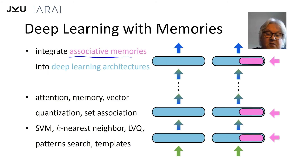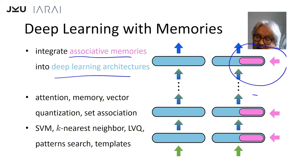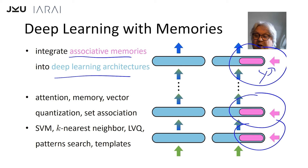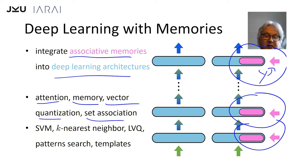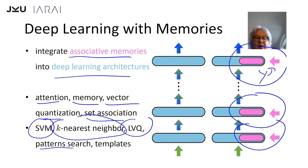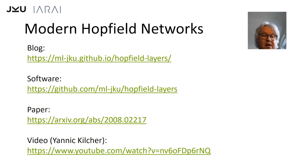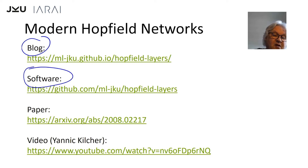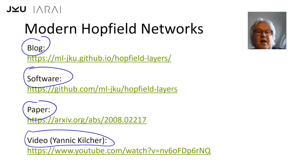Summarizing: we want to integrate associative memories into deep learning architectures. We bring in memories — it's up to the user what Y is, where it comes from: from a previous layer, externally, or from a database. These new architectures allow attention, memory, vector quantization, and set association in every layer. In each layer you can implement support vector machines, k-nearest neighbors, learning vector quantization, pattern search, or template extraction. We have a blog, software, a paper on arXiv, and a video by Yannic Kilcher. Thank you for your attention — have fun with modern Hopfield networks, try it out, you'll get new state of the art results.